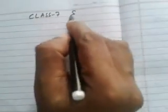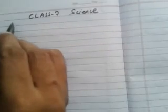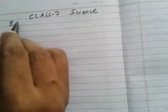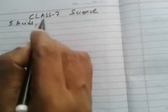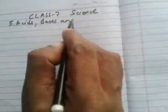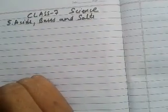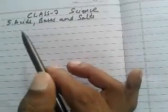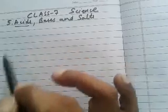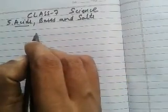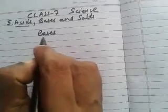Hello students, today I am teaching you Class 7 Science, Chapter 5: Acids, Bases, and Salts. In this chapter, I have already taught you about the Indicators and the Acids. Today, I will begin with a new topic: Bases.